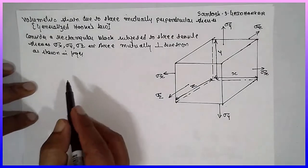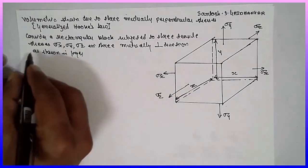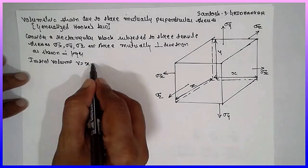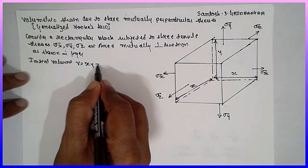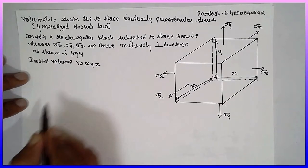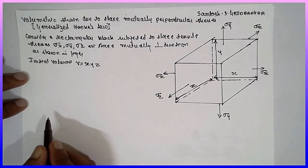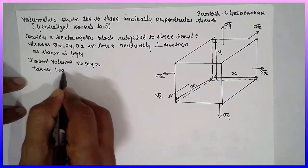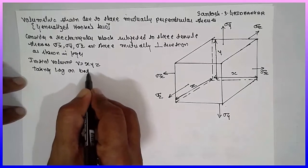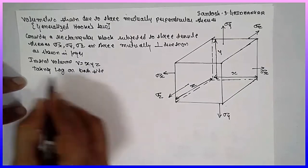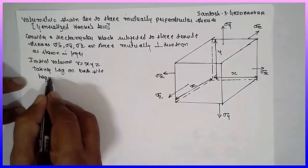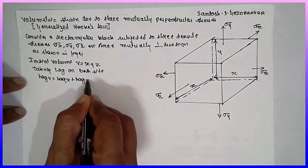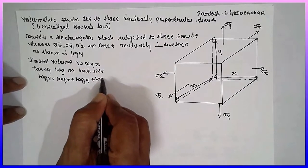The initial volume V is equal to x times y times z. Now, taking log on both sides: log V is equal to log x plus log y plus log z.